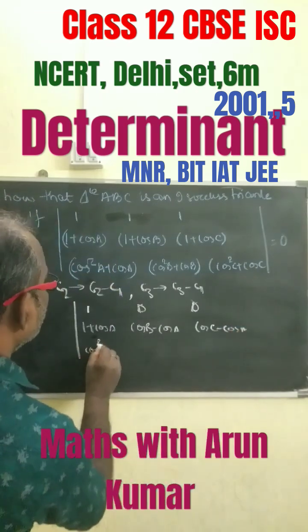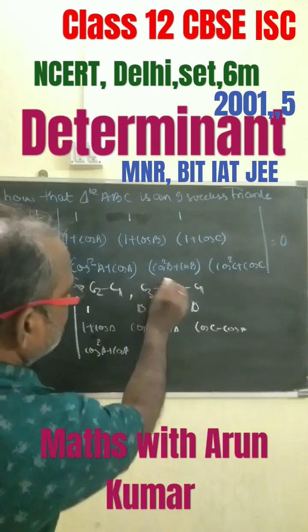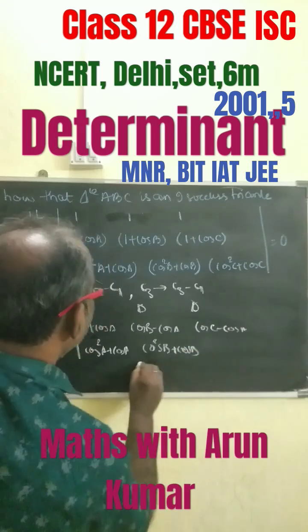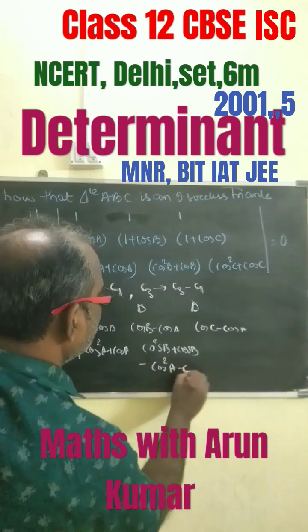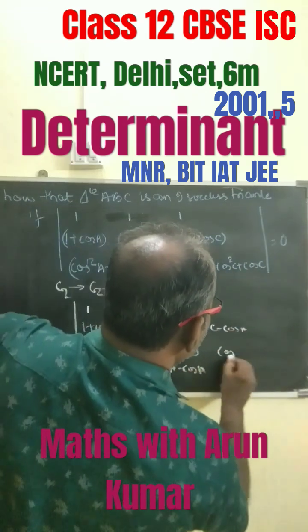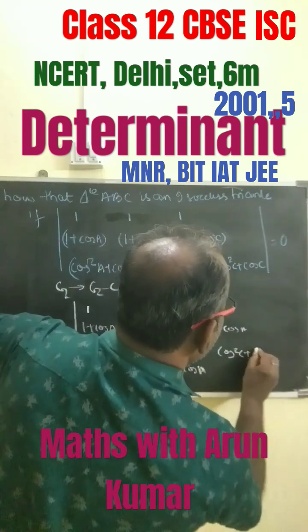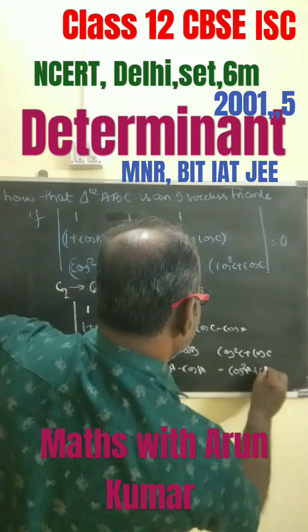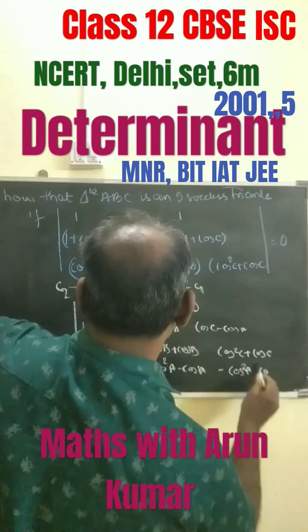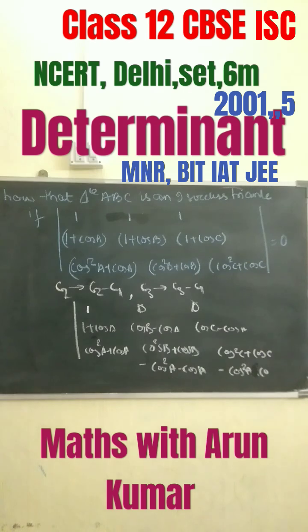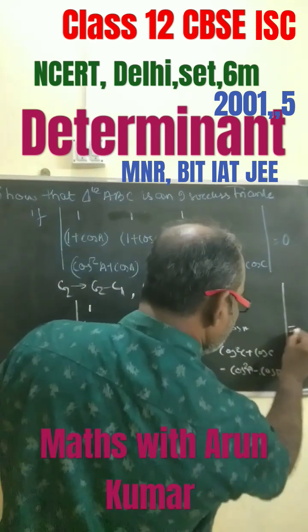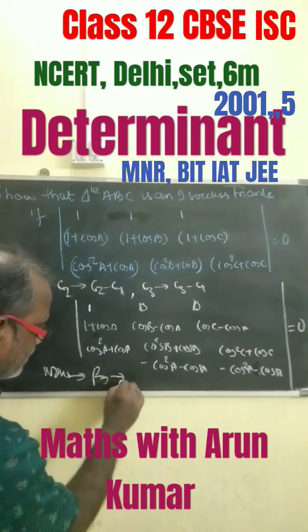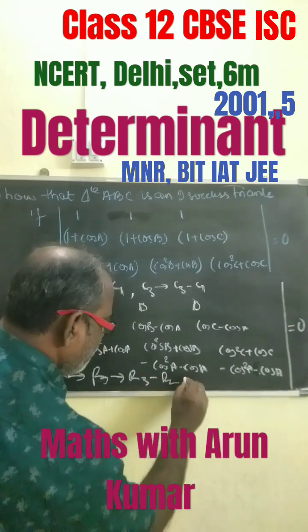Then here we get cos squared A plus cos A. This minus this is cos squared B plus cos B minus cos squared A minus cos A. And here cos squared C plus cos C minus cos squared A minus cos A, which is equal to 0. Now we move with R3, R3 minus R2.